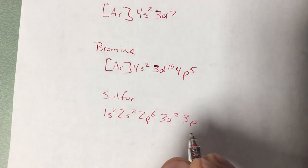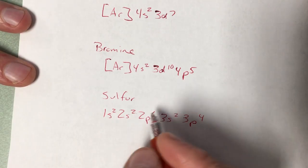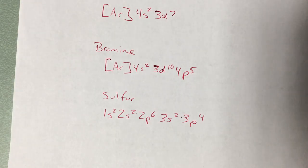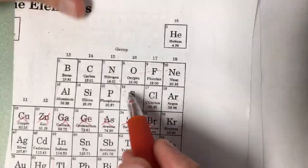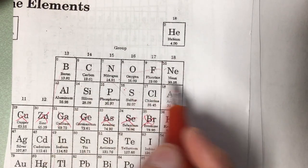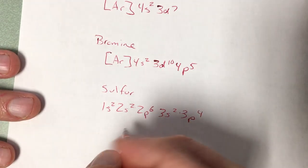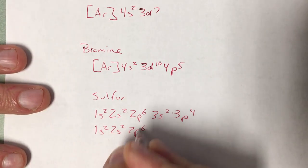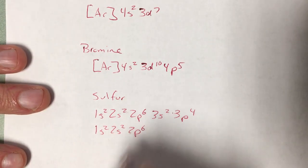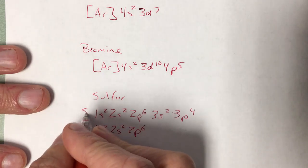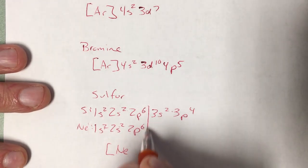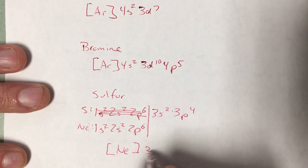Students find this the most challenging. If all else fails, you can figure it out by doing a bit of extra work. For sulfur, write the full electron configuration: 1S2, 2S2, 2P6, 3S2, 3P4 — that's 16 electrons total, matching sulfur's atomic number. If you don't know how to do those, go back and watch the video on electron configurations.